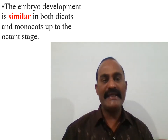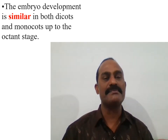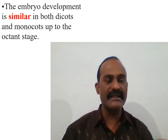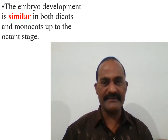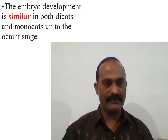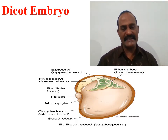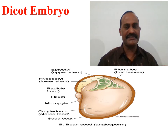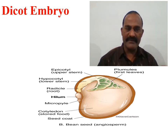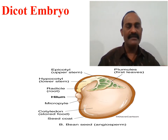Embryo development is similar in both dicotyledonous and monocotyledonous plants, particularly up to the octant stage; the difference is introduced only after the octant stage. In the dicotyledonous embryo there are three major parts: the plumule, the cotyledon, and the radicle.